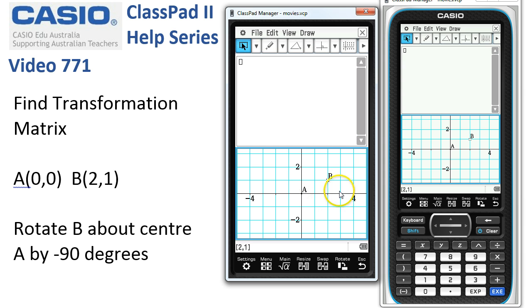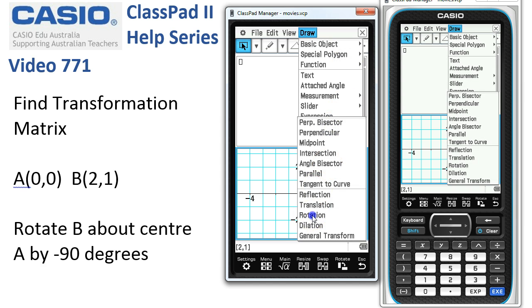We want to ask ClassPad to rotate it about A. So here we go: Draw, construct, rotation.